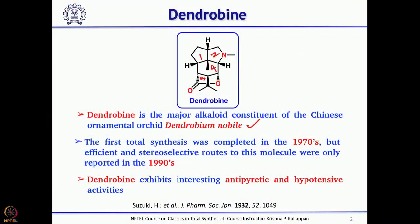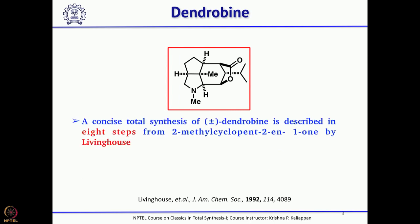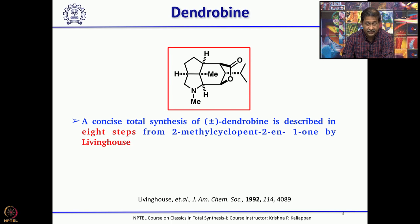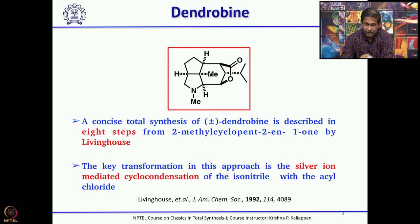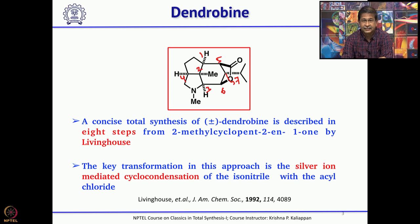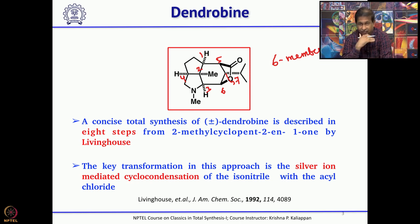Dendrobine exhibits some interesting biological activity - antipyretic and hypotensive activities. If you look at this molecule from a synthetic point of view, this tetracyclic compound itself is a big challenge. More importantly, if you look at the number of chiral centers, you can count 1, 2, 3, 4, 5, 6, 7 - there are 7 chiral centers, of which 6 are contiguous. That means all the carbons of the 6-membered ring are chiral.